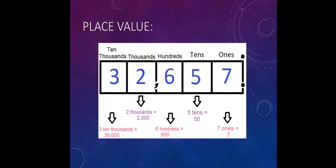Next, 2 thousands, 2 into 1000 is 2000. And last, 3 ten-thousands, 3 into 10,000 makes 30,000. We have seen about the place value.